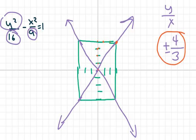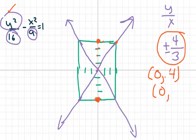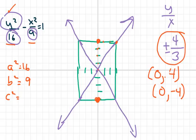The vertices are at (0, 4) and (0, −4). For the foci, a squared equals 16, b squared equals 9, and c squared equals 16 plus 9 equals 25, so c equals 5. Therefore a is 4, b is 3, and c is plus or minus 5.